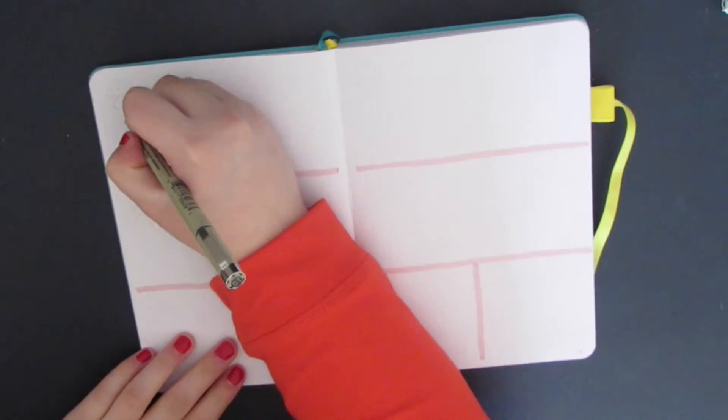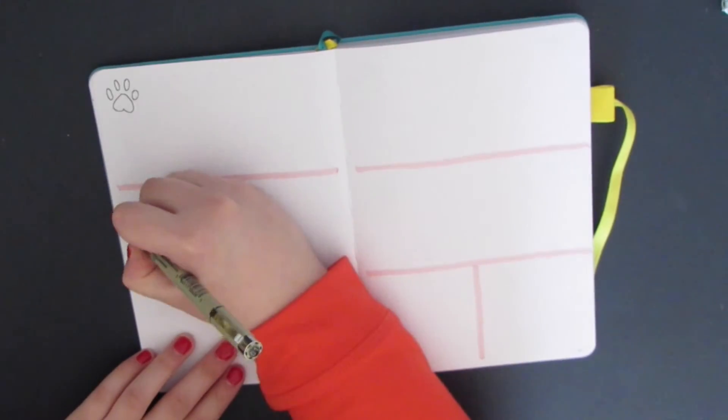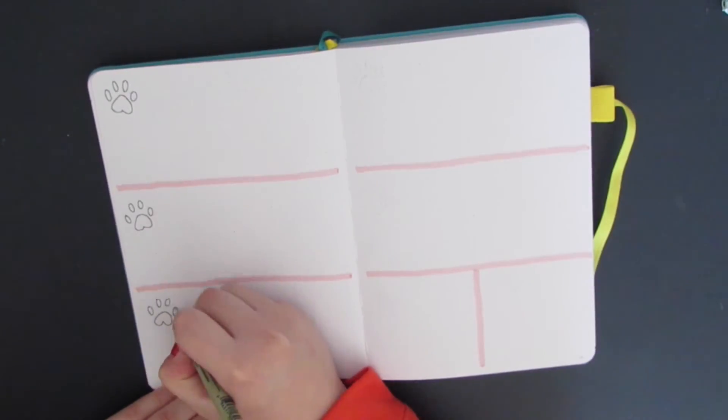For my weekly spread, I divide out the days of the week with a stripe of pink using the same markers as before. For the dates, I outline a paw print with my black micron pen, and I color in those little toe beans pink.